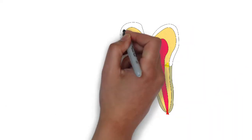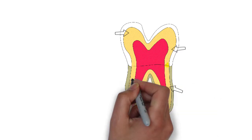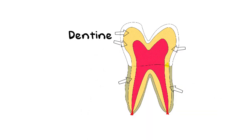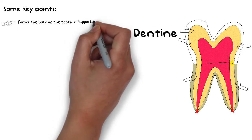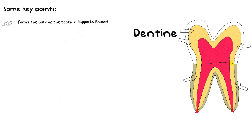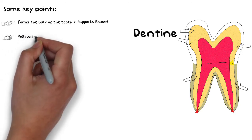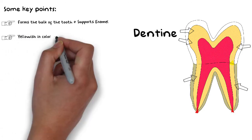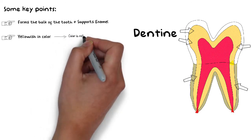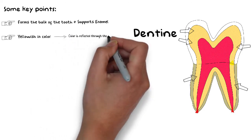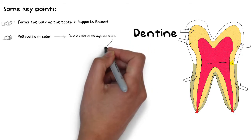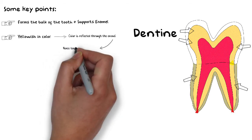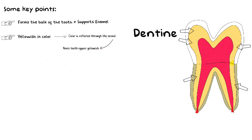Enamel gets its support from the next layer of the tooth, known as the dentine. The dentine forms the bulk of the tooth and also supports the enamel to compensate for its brittleness. The natural color of dentine is actually yellowish. The color of the tooth that we see is actually the color of the dentine being reflected through the translucent enamel — this is a very important point often asked in exams.